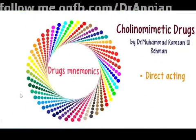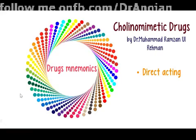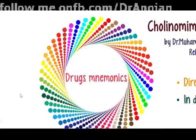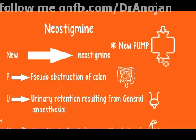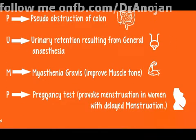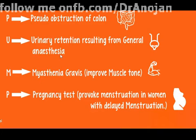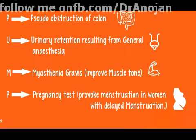Indirect acting cholinomimetics include neostigmine first. The mnemonic is 'new pump': N is for neostigmine, P is for pseudo-obstruction of the colon, U is for urinary retention - it is used in general anesthesia to avoid urinary retention, and M is for myasthenia gravis.